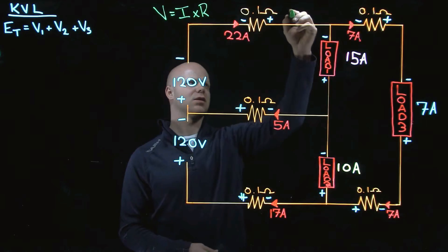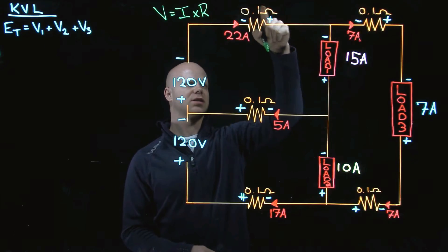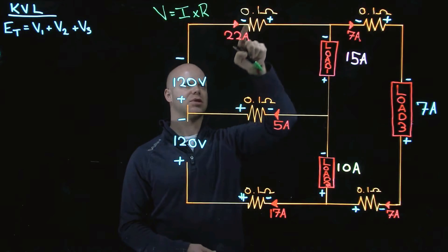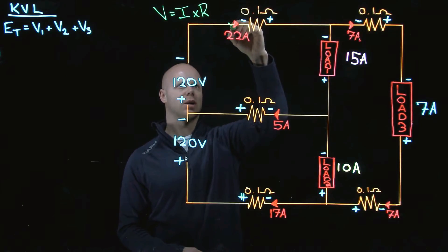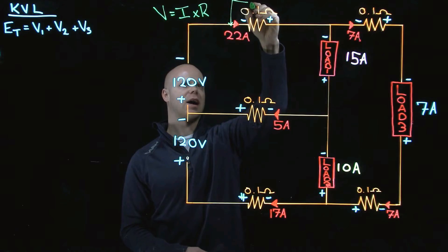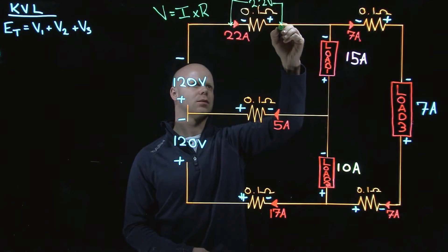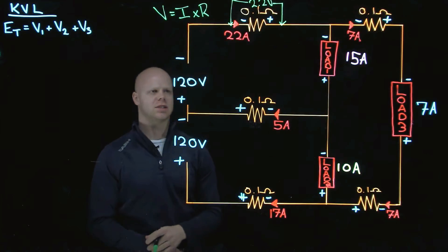So if I look at this, the voltage across this component, the volt drop across that conductor, would be 22 amps times 0.1. So if I were to measure, I would have 2.2 volts across that component.